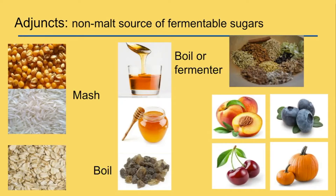The top right picture there has a bunch of spices, and then the bottom pictures there are fruit. Fruit and spices you can either add into the boil or into the fermenter, depending on what exactly you're looking for from that particular item.